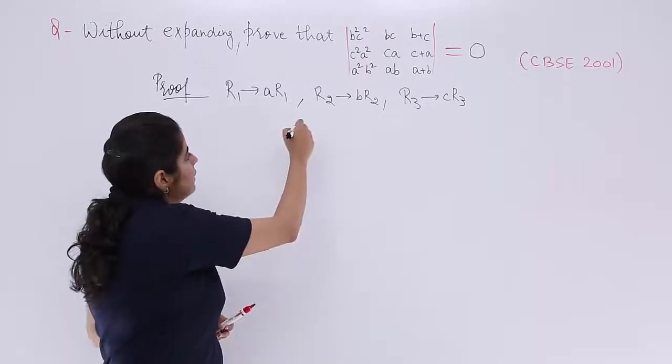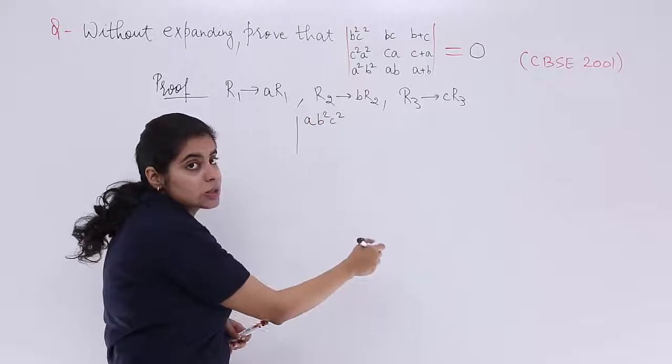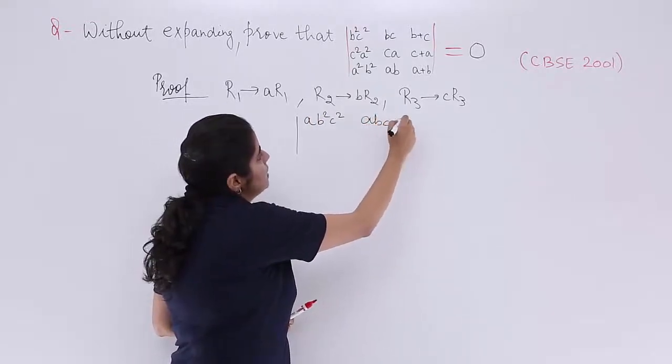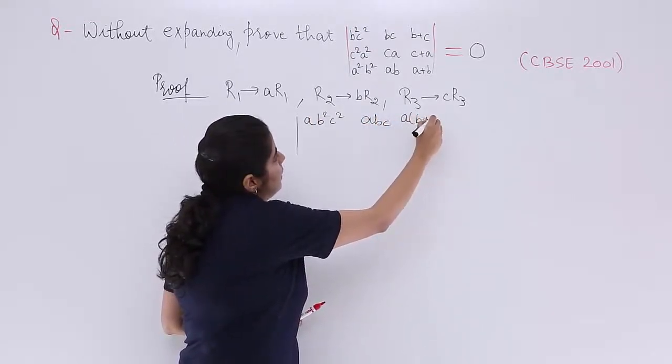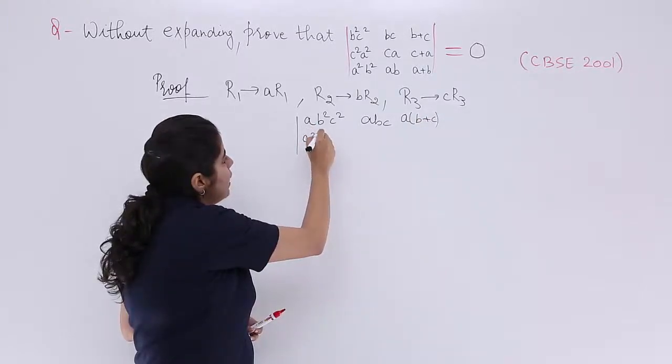When this happens, things become easier for us in the manner that my question now changes to A, B square, C square, ABC, A into B plus C. Similarly, A square, B square, C square.